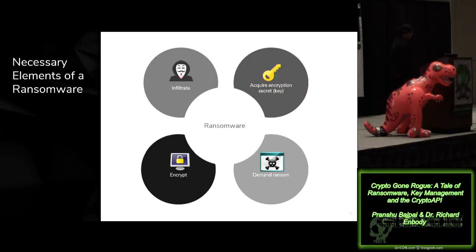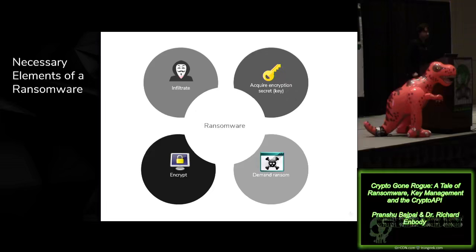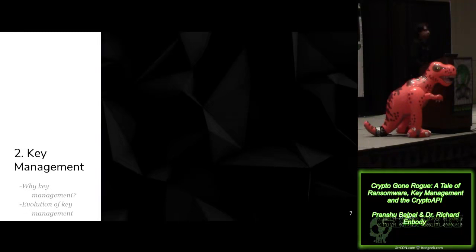We all know the necessary elements of a ransomware. The first thing is to infiltrate the computer — there are many attack vectors: social engineering, phishing, exploiting a vulnerability like EternalBlue to spread like a worm, or exploiting weakly secure RDP sessions. The next thing to do is acquire an encryption secret. This is very important because you need a unique encryption secret per victim — if you had the same encryption key for every victim, victims would share keys among themselves and compromise the whole ransomware campaign. Once the ransomware acquires that key, it encrypts users' data, then demands a ransom.